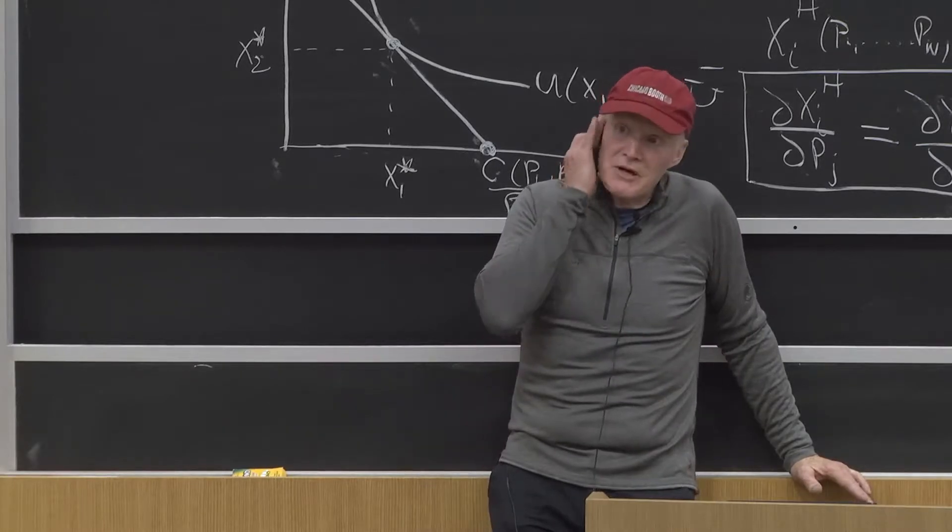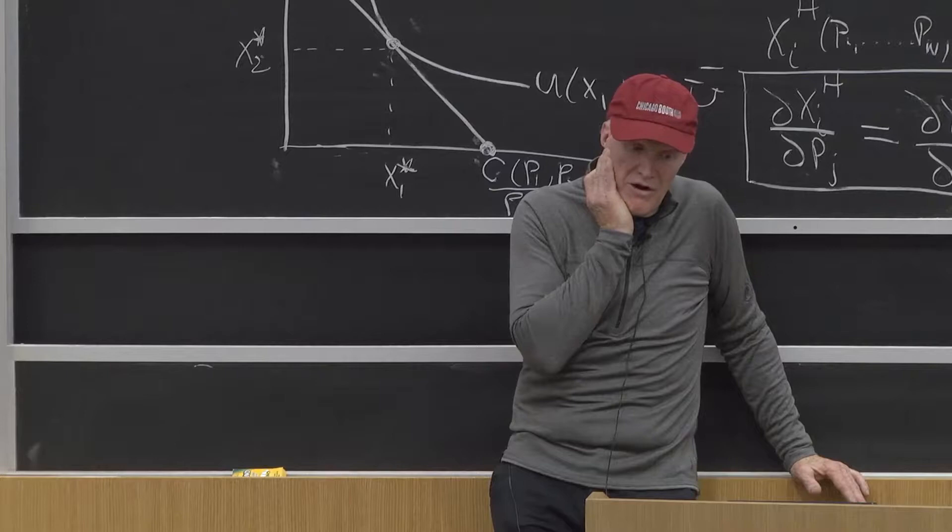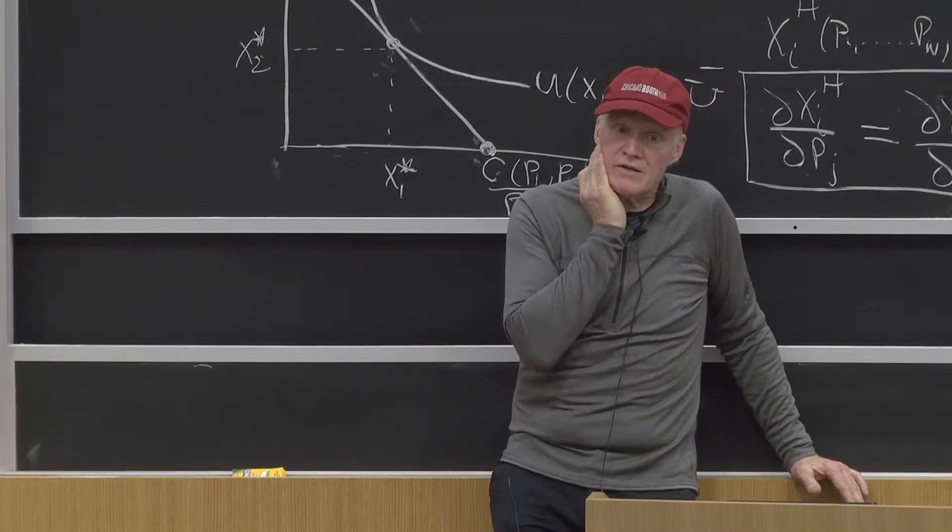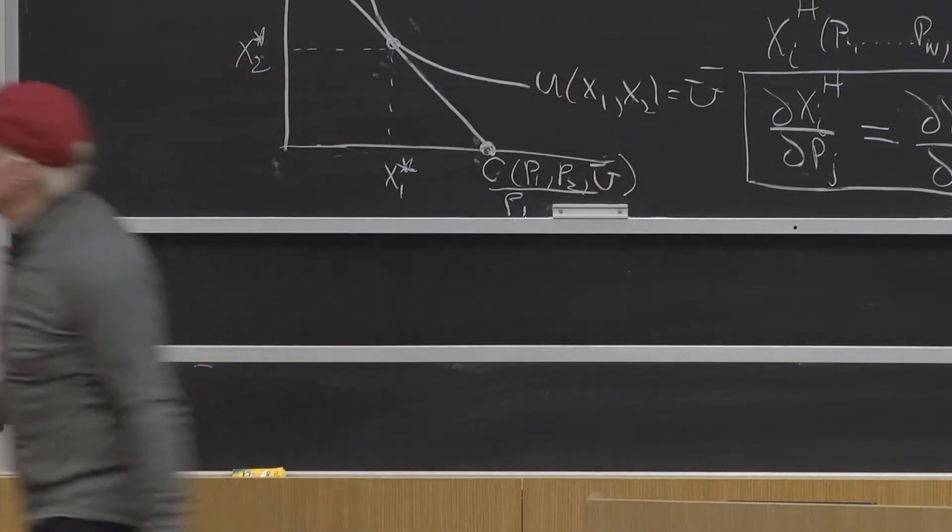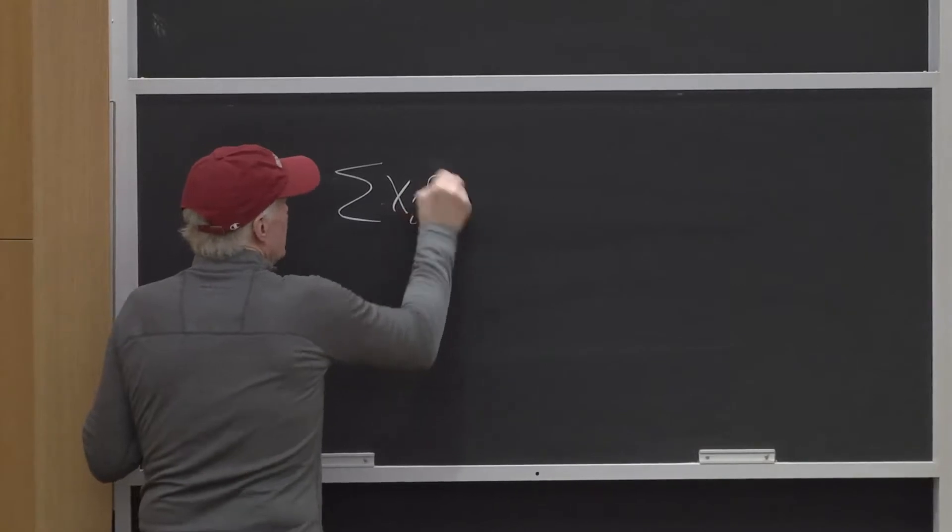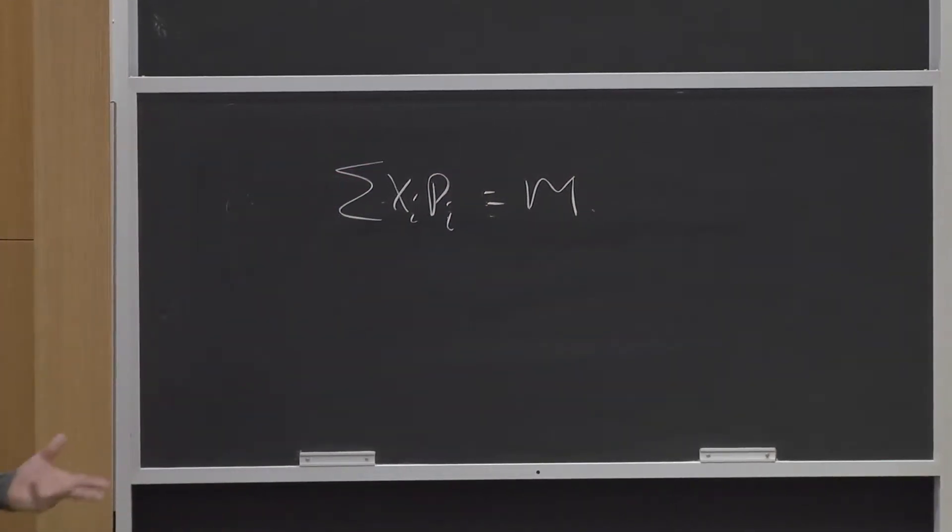Adding up really comes off the budget constraint, just like adding up in the Hicksian model came off the utility constraint. So, for example, just start with the budget constraint. What is the budget constraint? Sum of the xi pi equals m. That's the budget constraint.